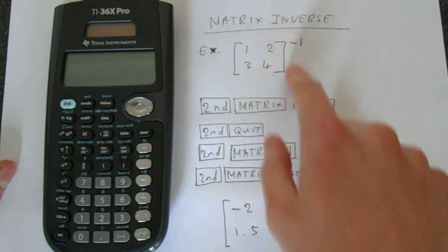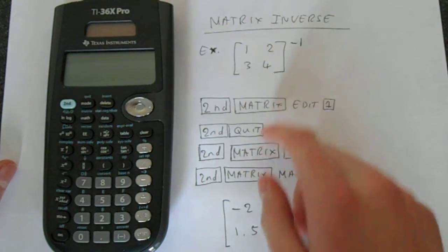We're just going to find the inverse of this 2x2 matrix and we're just going to make it 1, 2, 3, 4 so it's easy to remember.